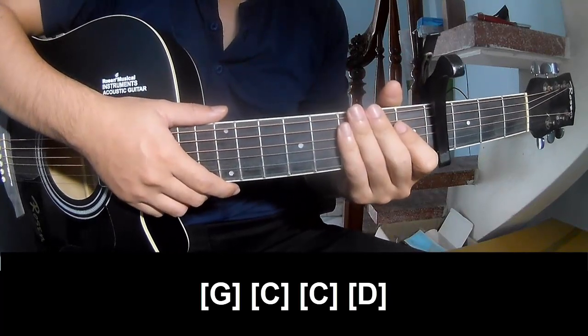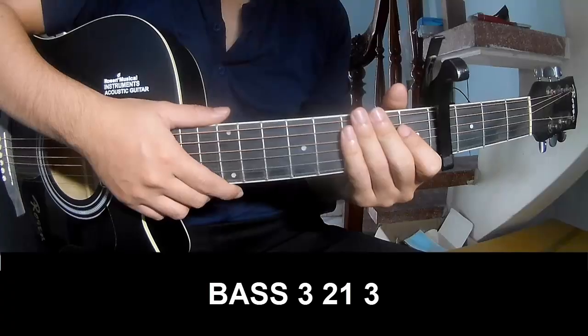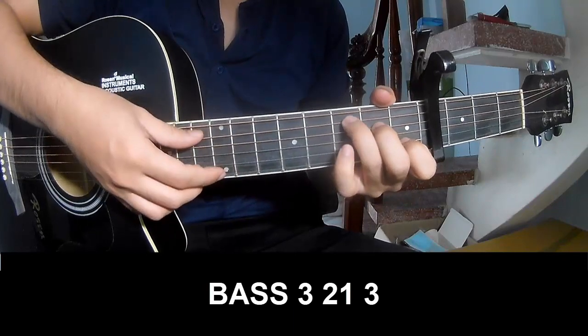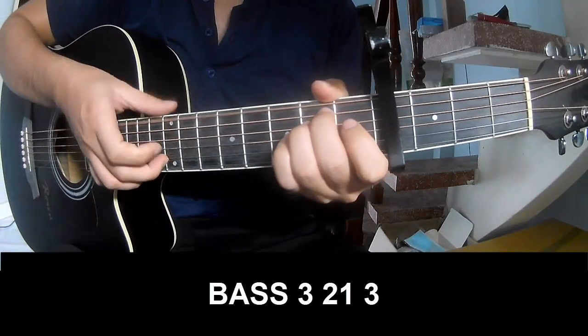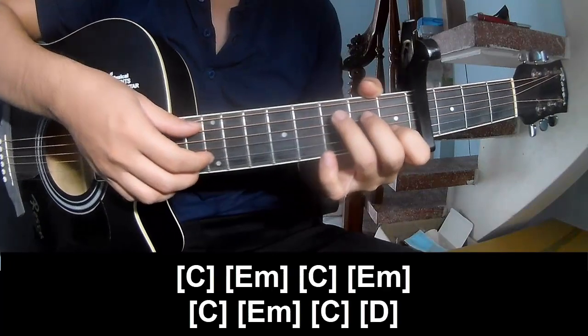The strumming pattern is the same for each chord. Choose your chord and play bass 3-2-1-3, bass 3-2-1-3, and then play a long C.